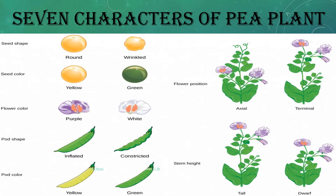The second character is seed color — yellow is dominant and green is recessive. Flower color: purple and white. Pod shape: inflated and constricted. Pod color: yellow and green. Flower position: axial and terminal. And height of the stem: tall and dwarf.